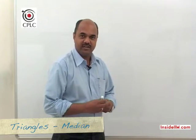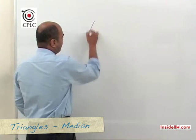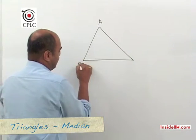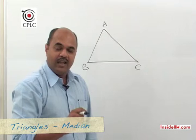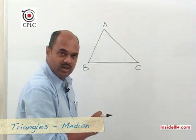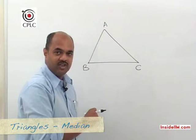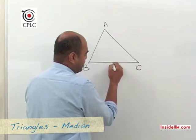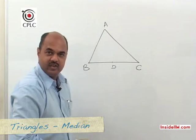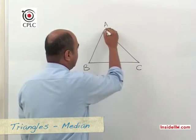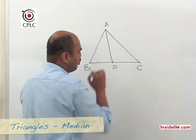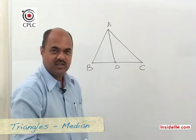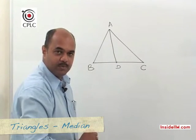What is a median? If I have a triangle ABC, then a median is a line which joins a vertex to the midpoint of the opposite side. So if I take vertex A and D is the midpoint of BC, then AD would be the median to side BC.